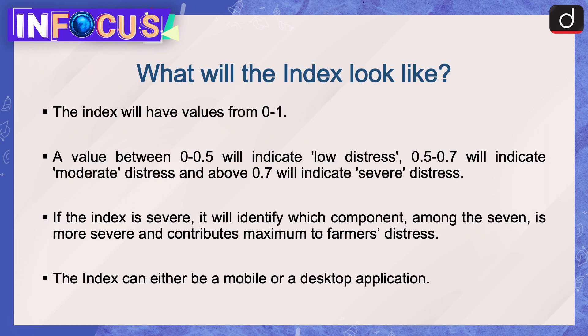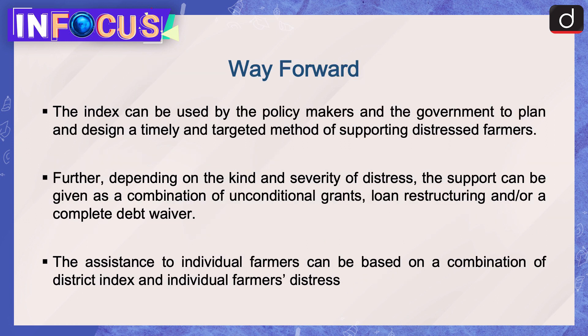The index will have values from 0 to 1. A value between 0 to 0.5 will indicate low distress, 0.5 to 0.7 will indicate moderate distress, and above 0.7 will indicate severe distress. If the index is severe, it will identify which component among the seven is most severe and contributes maximum to farmers' distress. The index can be either a mobile or a desktop application.